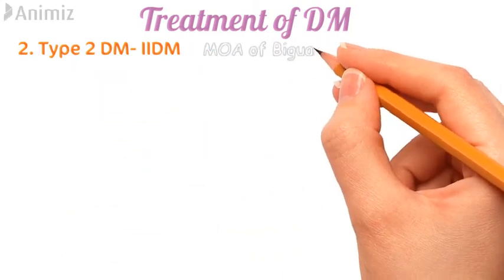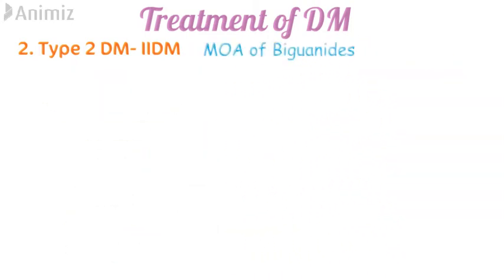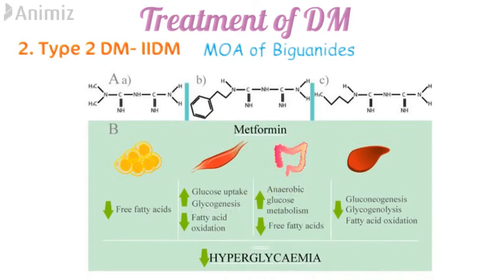Next is the mechanism of action of biguanides, which contains only one drug: metformin. It reduces free fatty acids. In muscle, it increases glucose uptake and promotes glycogenesis, and reduces fatty acid oxidation. It increases anaerobic glucose metabolism. In the liver, it decreases glucogenesis and gluconeogenesis and free fatty acid oxidation, and as a result reduces the blood glucose level.